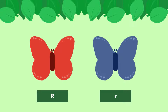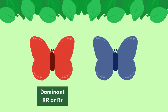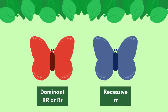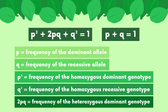We can represent the red butterfly using the allele big R, and represent the blue butterfly using the allele little r. Since the red color is dominant, the genotypes RR and Rr will lead to a red-colored butterfly, since we only need one dominant allele to have the dominant phenotype. Only the genotype rr will lead to a blue-colored butterfly.